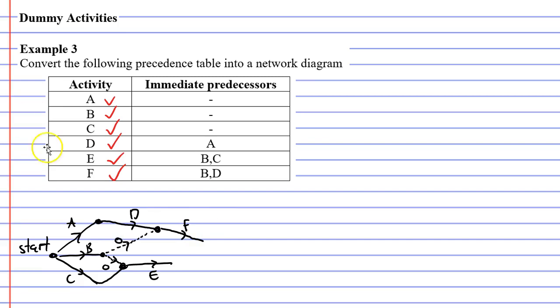Now I want to double check this. I want to double check that activities E and F follow on from their immediate predecessors. So we'll look at activity E. Activity E follows on from activities B and C, which is what we wanted. And activity F follows on from activities B and D, which is also what we wanted. So we know that it's working now.